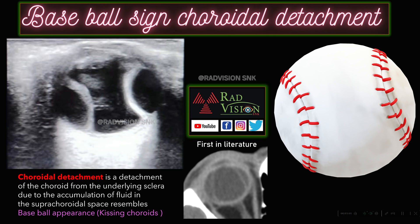Next case: a classical case of choroidal detachment where the choroid is completely detached and there is fluid accumulation in the subchoroidal space. This appearance classically mimics a baseball, so I have named it the 'Baseball Sign' in choroidal detachment. Previously in literature it has been known as the 'Kissing Choroid Sign,' but the appearance more aptly mimics a baseball. This naming is also first in literature.